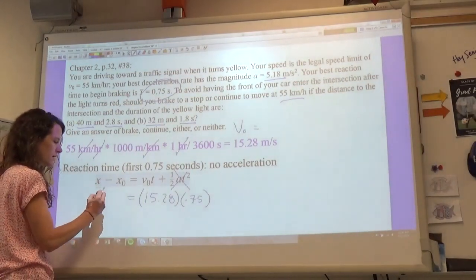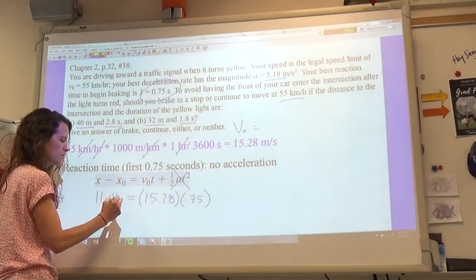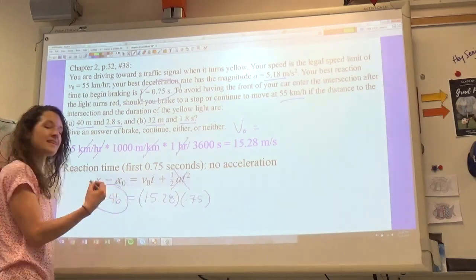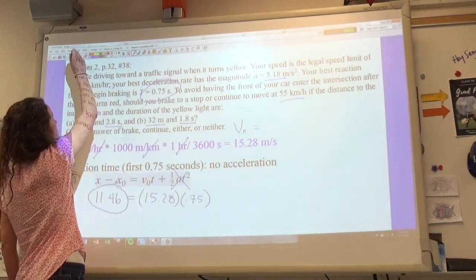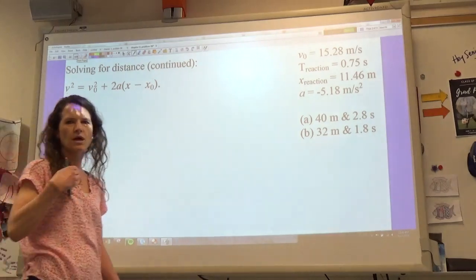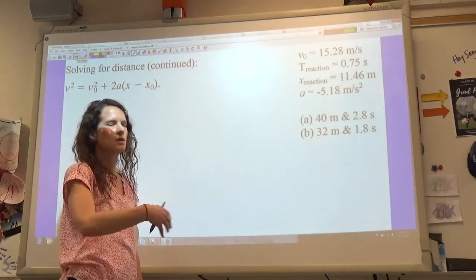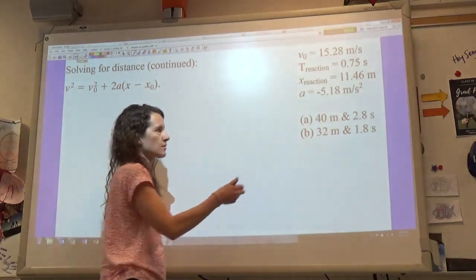And so if you work that on your calculator, you find that you travel 11.46 meters in that first bit of time. So that is helpful for us to figure out the total distance that we're going to travel while we're trying to decelerate at this rate.